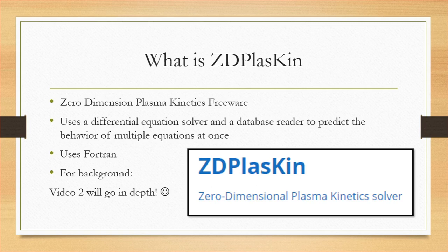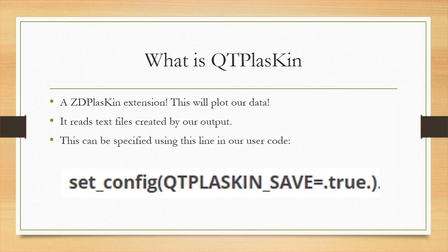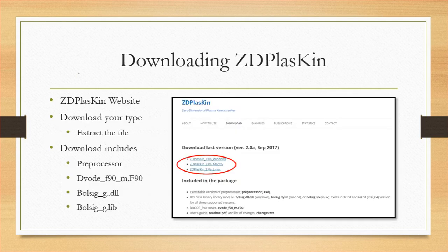I'll go into more detail on what this software is in my next video. To download ZD Plaskin, go to the website — I have a link in my description. I'll be working in Windows, so all of my tutorials will be using the Windows download. The download itself has a bunch of components, but the most important parts are the preprocessor, the Devode solver, and the Bulsig database readers. There isn't much to change when you're trying to run ZD Plaskin, just be sure to extract all your files.